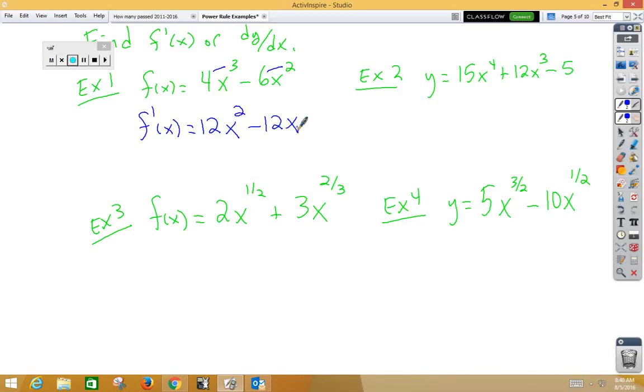In my second example, dy dx this time, because it says y equals, multiply 15 times 4 is 60x cubed, multiply 12 times 3 is 36x squared. The derivative of a constant is 0. If we think about it as x to the 0 power, then when you multiply you get 0, and anything times 0 is 0.